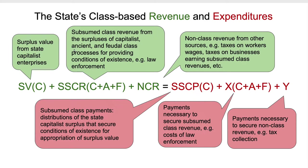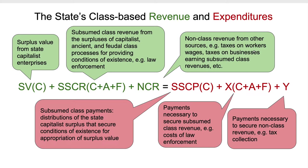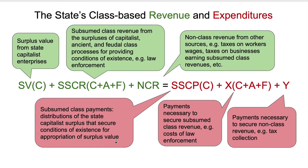The ancient fundamental class process is not the only thing going on in agriculture — there is also small capitalism developing, where some more prosperous farmers hire agricultural labor and pay them a wage. The state also receives non-class revenue from taxes on workers' wages and businesses. Whenever you appropriate surplus, you have subsumed class payments — distributions of the surplus that secure the conditions of existence which make it possible to appropriate that surplus.